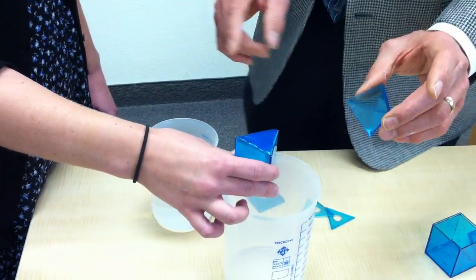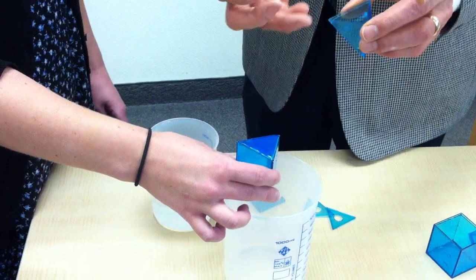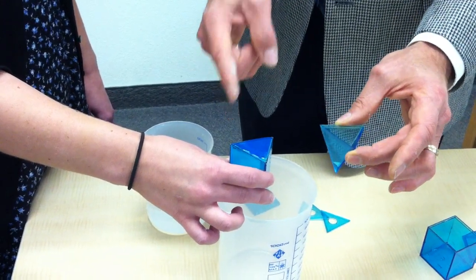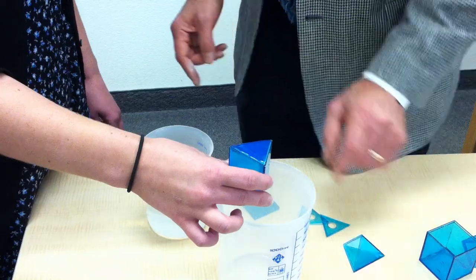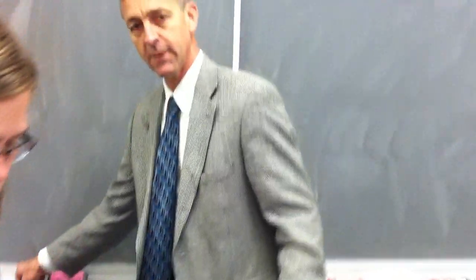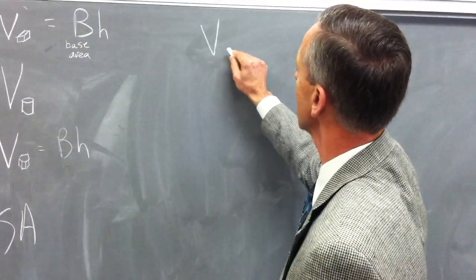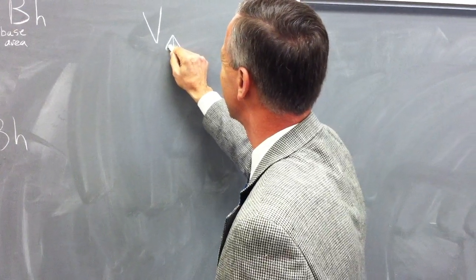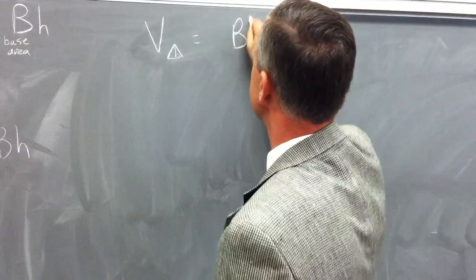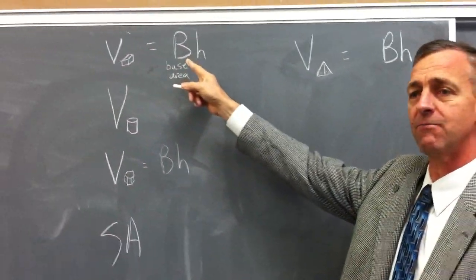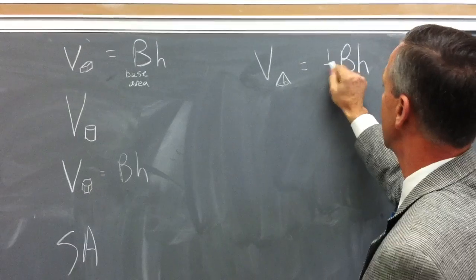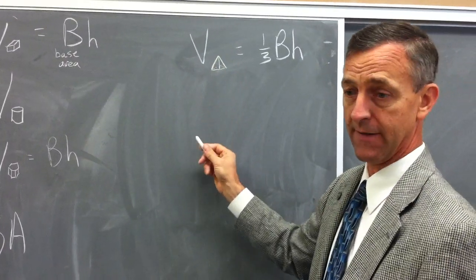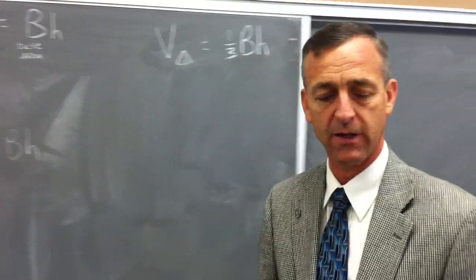It ran a little high because I poured past the base line, but you can see it is a three-to-one ratio. That leads us to the formula: volume of a pyramid is equal to base times height — just like the prism formula — however, we take one-third of it. If a prism comes to a point we call it a pyramid, and the volume is one-third of what it would have been had it gone straight up.